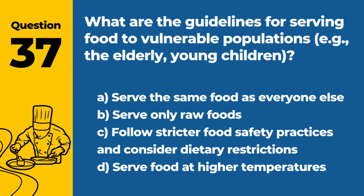Question 37. What are the guidelines for serving food to vulnerable populations, e.g., the elderly, young children? a. Serve the same food as everyone else. b. Serve only raw foods. c. Follow stricter food safety practices and consider dietary restrictions. d. Serve food at higher temperatures. Answer c. Follow stricter food safety practices and consider dietary restrictions. When serving food to vulnerable populations such as the elderly and young children, it's important to follow stricter food safety practices and consider any dietary restrictions.